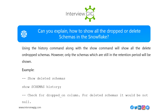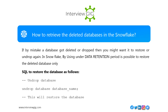How do you show all dropped or deleted schemas in Snowflake? Using the HISTORY keyword along with the SHOW command will show all deleted or dropped schemas. However, only schemas still within the retention period will be shown. Example: SHOW SCHEMAS HISTORY; — check the DROPPED_ON column for deleted schemas; it would be NOT NULL.